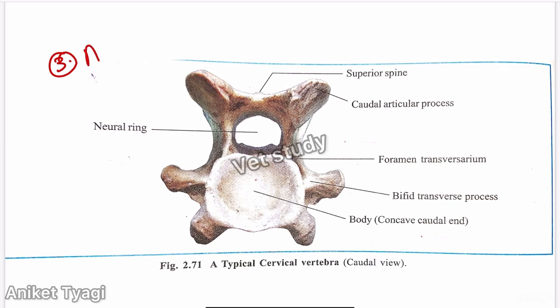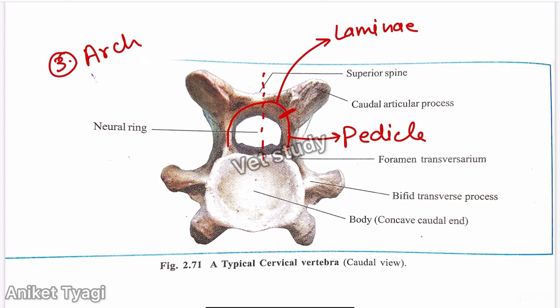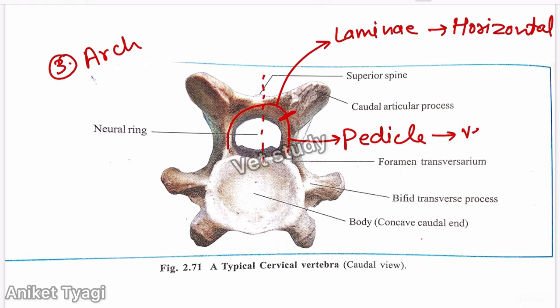The third component is the arch. The arch can be divided into two parts: laminae and pedicle. The laminae is the horizontal part, and the pedicle is the vertical part. The pedicle bears some notches, and there is a caudal articular process at the junction between the lamina and pedicle.